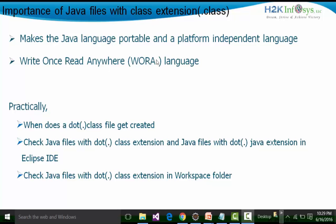What do we mean by portability? Portability means that you create code in, let's say, a Windows platform. The moment you create the code, the compiler creates the same file with a .class extension. This .class extension-based Java file can then be taken to another platform — such as Linux, Mac, or Sun Solaris — and you can run the same program on those platforms. That is called portability.